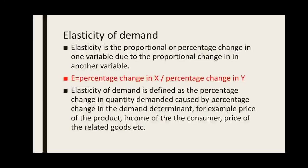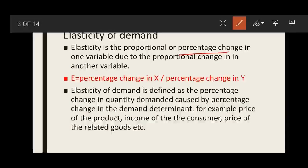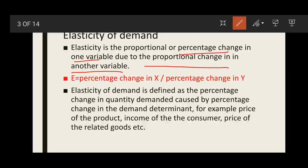So first, what is elasticity? Elasticity is the proportional or percentage change in one variable due to proportional change in another variable. If there is a change in one variable, elasticity explains how much change occurs in the other variable as a result. Elasticity is denoted by capital E. The formula can be written as: percentage change in X upon percentage change in Y. If there is a proportional change in Y, the percentage change that occurs in X is measured through elasticity.